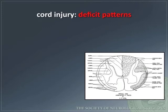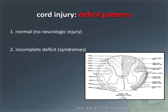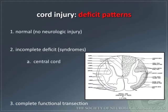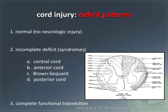Cord injuries can vary from asymptomatic to complete functional transection, with incomplete syndromes in between. More specifically, incomplete cord syndromes are: central cord, anterior cord, Brown-Séquard, posterior cord, and conus/epiconus.